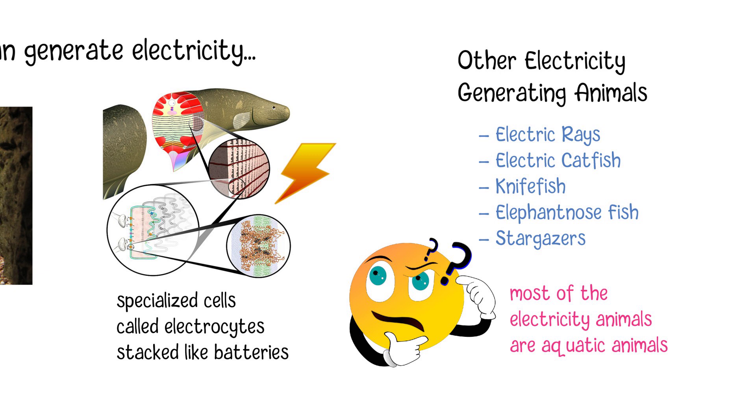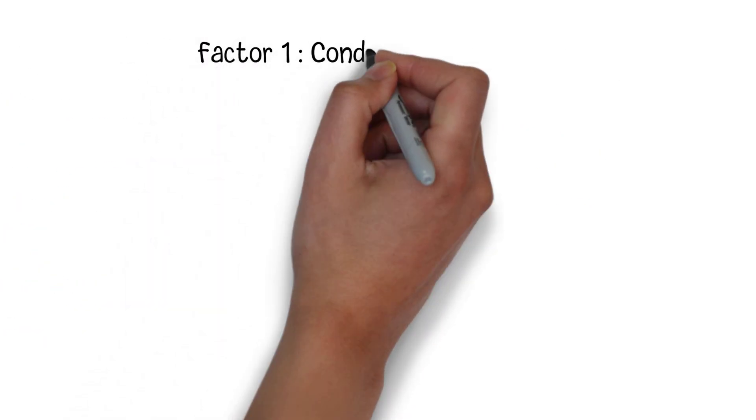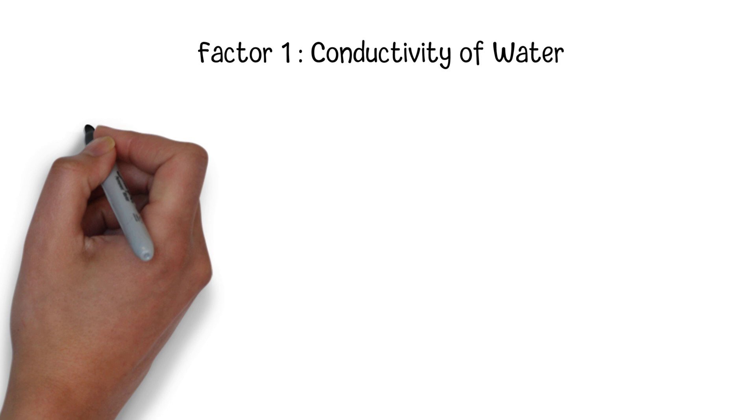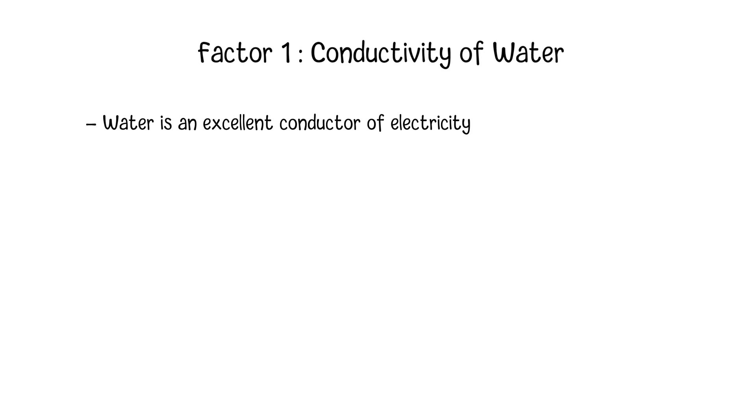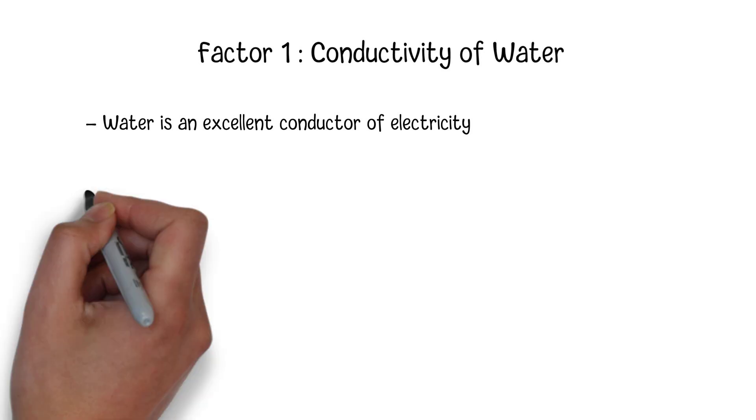Actually, the prevalence of electricity-generating abilities among aquatic animals can be attributed to several factors. Factor 1: Conductivity of water. Water is an excellent conductor of electricity. This property allows electric signals to travel efficiently through water,